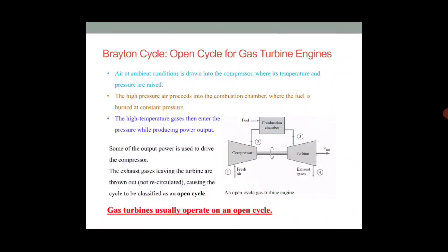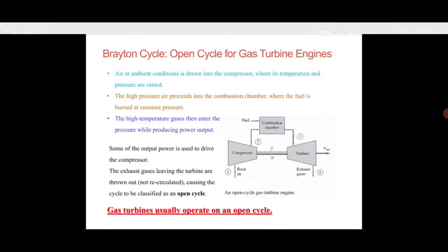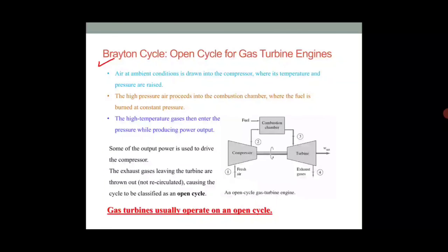Now we are going to talk about the Brayton cycle. The Brayton cycle is nothing but the air standard cycle — it is also called the constant pressure air standard cycle, because pressure is maintained constant during heat addition and heat rejection. The Brayton cycle is the only cycle used in gas turbine engines, so the gas turbine engine cycle and the Brayton cycle are the same thing. This type of confusion can appear in gate exams.